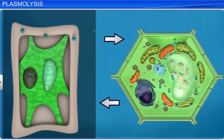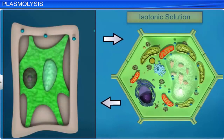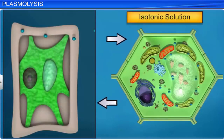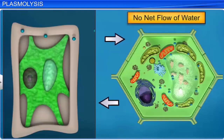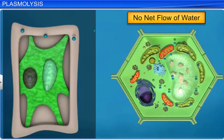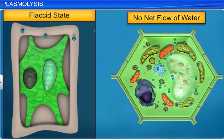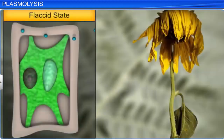If a plasmolyzed cell is placed in an isotonic solution instead of a hypertonic or hypotonic solution, there is no net flow of water from either inside or outside the cell. When the flow of water from and into the cell is in equilibrium, the cell is said to be in a flaccid state. Flaccid cells are found in a wilted plant that has not been watered for a long time. Therefore, the surrounding external solution decides the behavior of the cell.